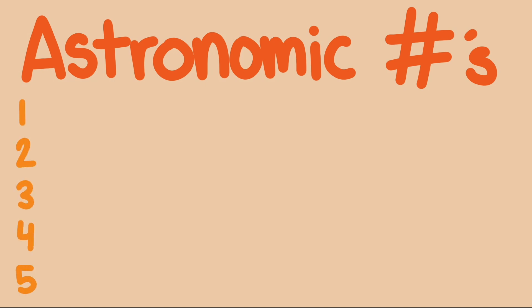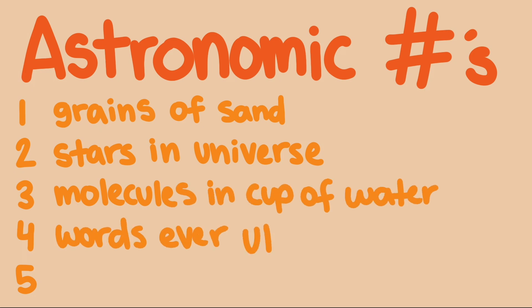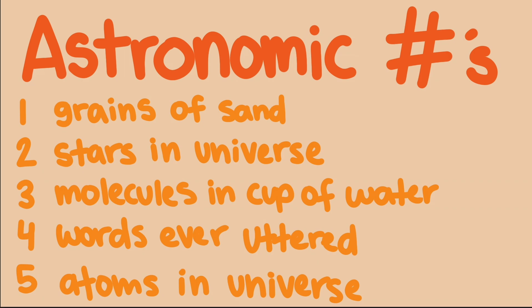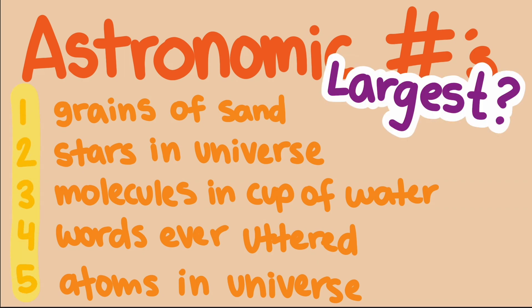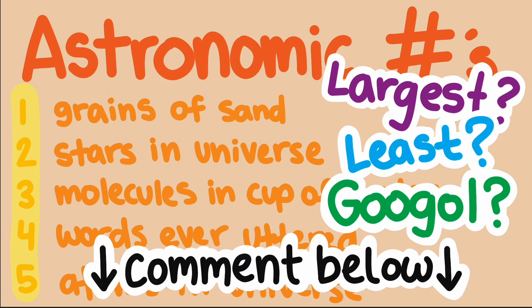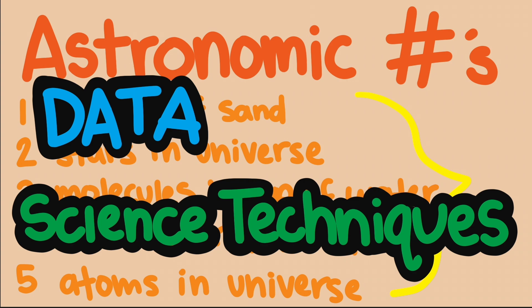There are a few things that have astronomical numbers. We're going to compare five quantities today: the number of grains of sand on Earth, stars in the known universe, molecules in a cup of water, words ever uttered in the history of humans, and the number of atoms in the universe. Of all these, which do you think is the largest? Which is the least? Are any of them bigger than a Google? Before we dive in, put your guess in the comments. None of these can be calculated strictly through mathematics, so we need some data and techniques that scientists use to get a handle on such big quantities.